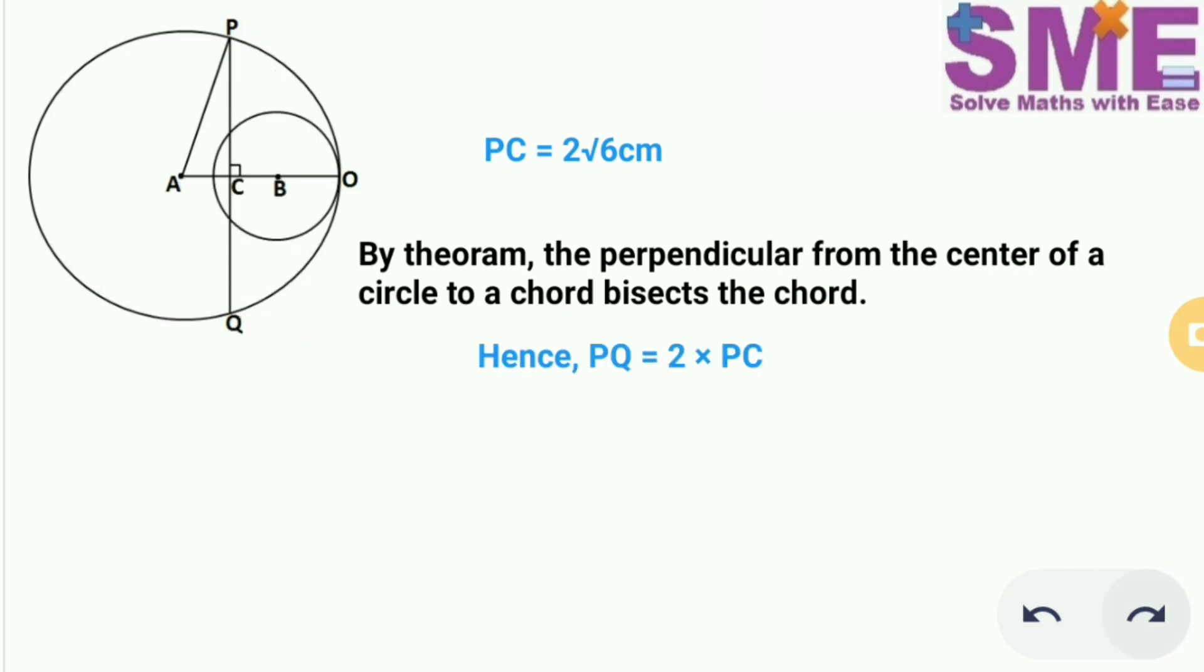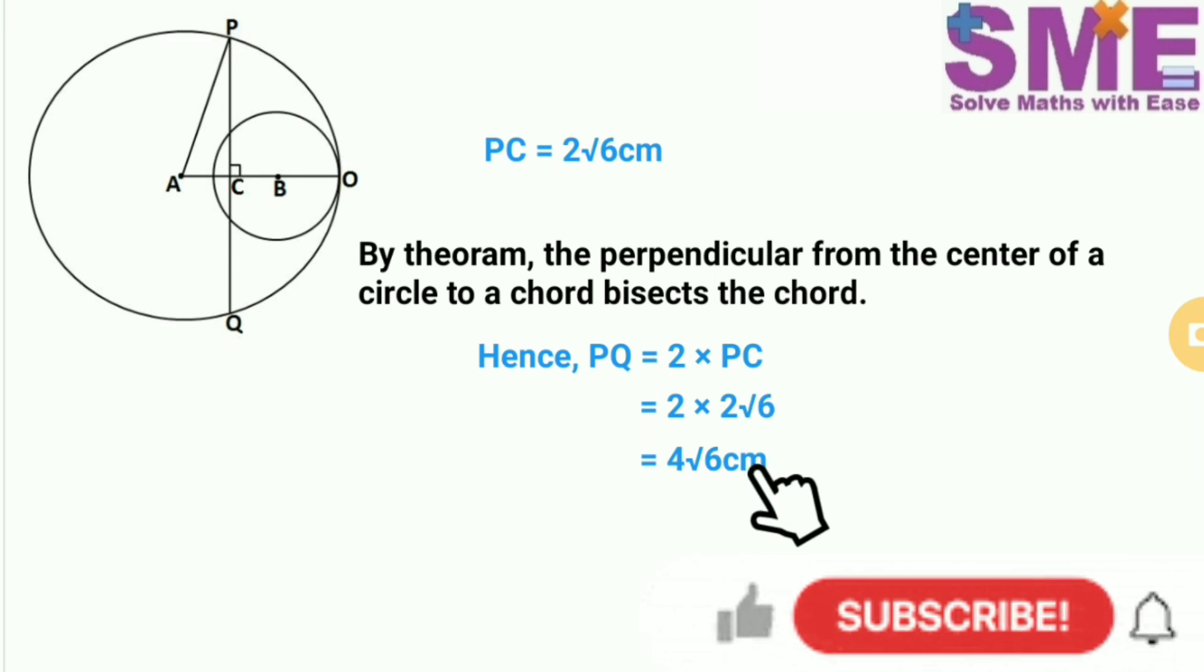So we have PQ is equal to twice of PC. So we substitute the value of PC as 2√6, we get the length of the chord PQ as 4√6 cm.